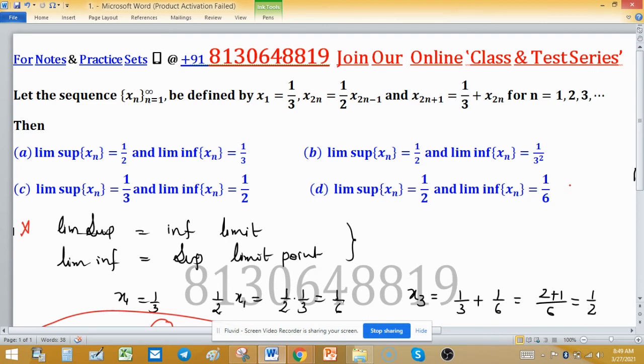So, limit superior is half, and limit inferior is 1 upon 6. Always keep in mind, whenever sequence is bounded, then limit superior is largest limit point, and limit inferior is smallest.